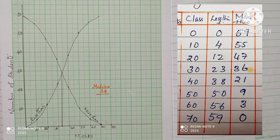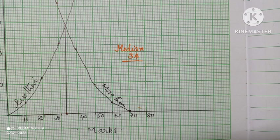First one is corresponding to 0, we have to put 0. Next one, corresponding to 10, we have to plot 4. Like that, we will get less than and more than by plotting 59 on the top and coming 55, 47. Joining the graph using a curve, the point of intersection is median. From the point of intersection, we are drawing a perpendicular to the x-axis. The perpendicular to the x-axis is meeting at 34. Therefore, the median is 34.